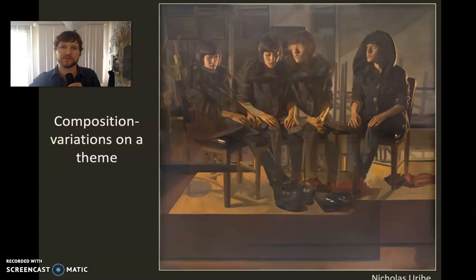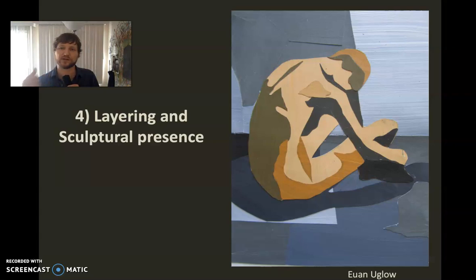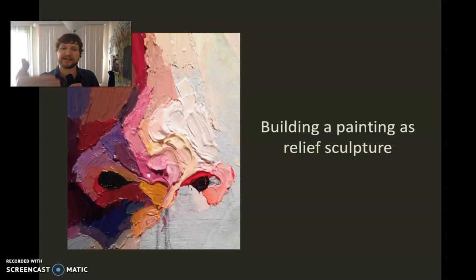Then we have layering and sculptural presence. The way you layer paint is very important because the painting has to be beautiful in and of itself. Especially with acrylic or oil — an opaque paint — you typically keep the shadows thin and the lights thicker. It's like a little relief sculpture you're building out. If you looked at a painting from the side, you'd actually see little mountains and valleys — that's what I mean by a relief sculpture.